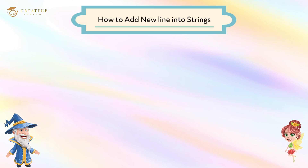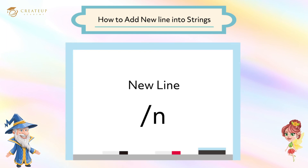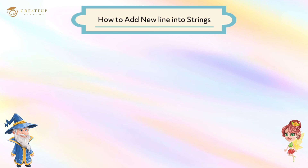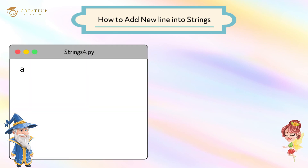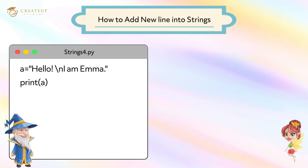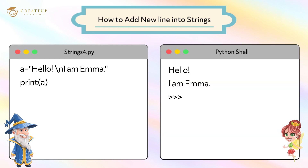How to Add a New Line into Strings. If you want to add a new line, use a newline character. The newline character is written as a backslash and n. Let's put this newline character between 'Hello' and 'I am Emma'. I'll try it. I save the program and run the module. I was able to break a line in the middle of a string.